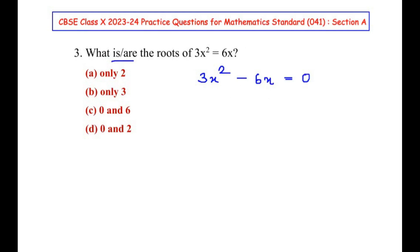We can split this up as 3 × x × x, and 6 can be written as a product of its prime factors, that is 2 × 3 = 6, times x = 0.